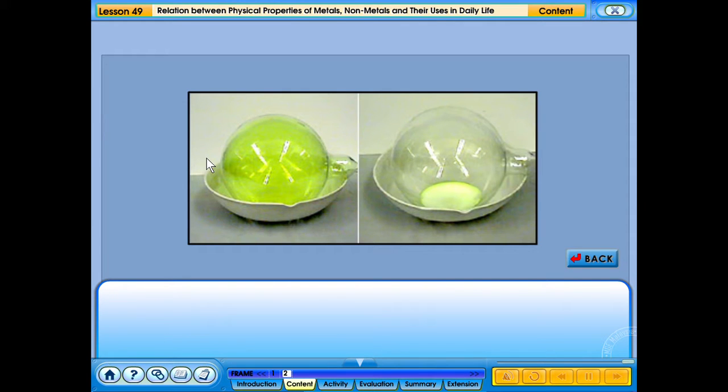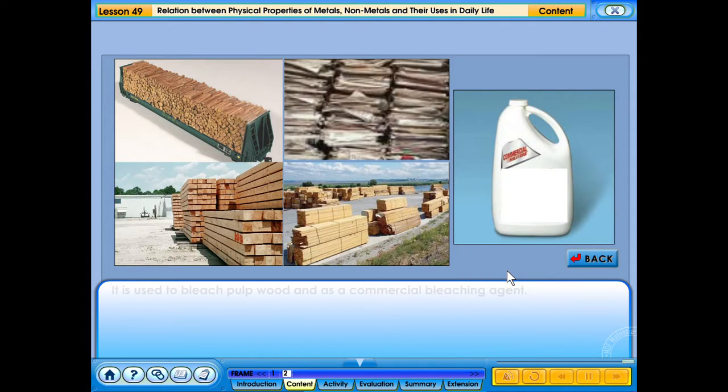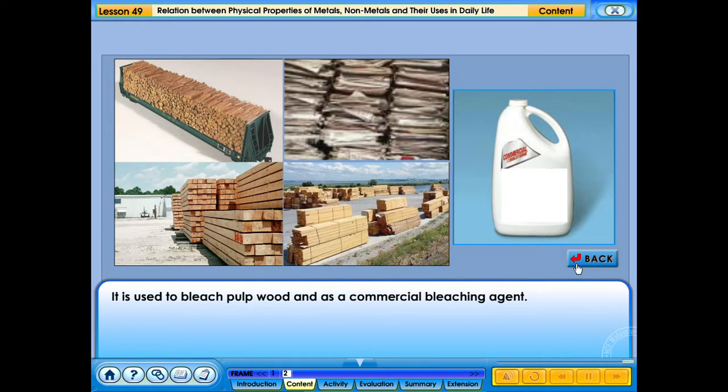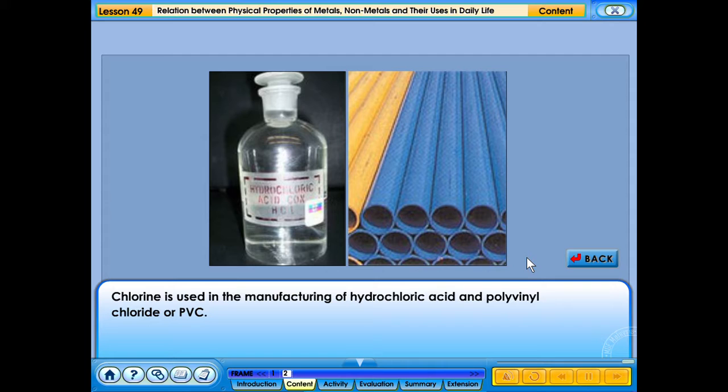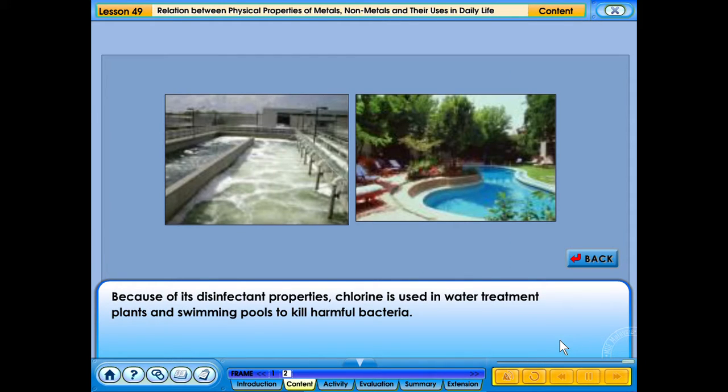Uses of chlorine in daily life. Chlorine is a yellowish-green, acidic gas with bleaching properties. It is used to bleach pulpwood and as a commercial bleaching agent. Chlorine is used in the manufacturing of hydrochloric acid and polyvinyl chloride or PVC. Because of its disinfectant properties, chlorine is used in water treatment plants and swimming pools to kill harmful bacteria.